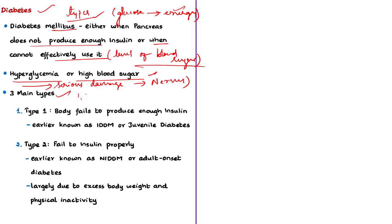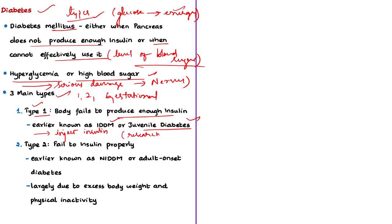The main types of diabetes are Type 1, Type 2, and gestational diabetes. Type 1 diabetes is due to the body's malfunction to produce insulin, requiring patients to inject insulin. It was previously referred to as insulin-dependent diabetes mellitus or juvenile diabetes; its exact cause is not yet known. Type 2 diabetes is due to insulin resistance — a condition in which body cells fail to use insulin properly — previously referred to as non-insulin-dependent diabetes mellitus or adult-onset diabetes.